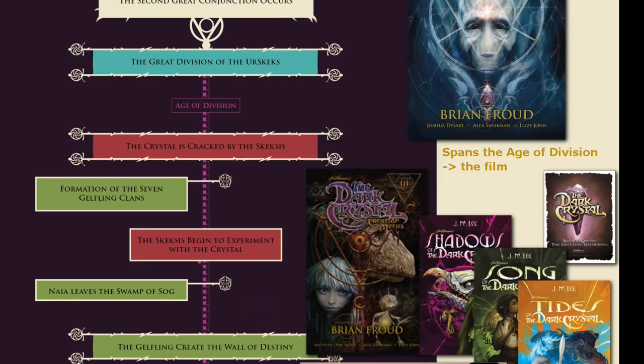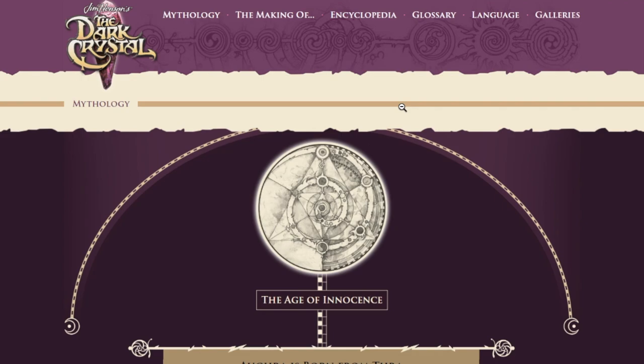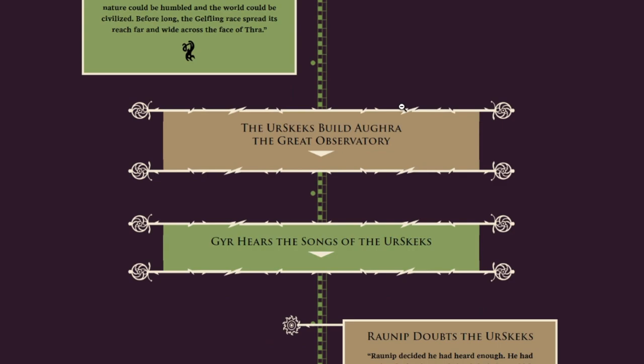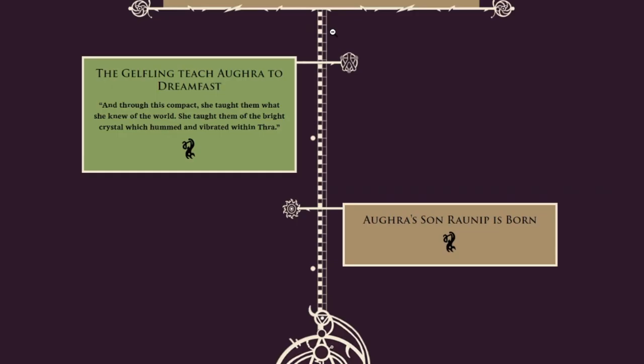I am trying something new — I really just have the timeline from the website. If you go to darkcrystal.com and click on Mythology, there you have this really long timeline. If you have not read it yet, it is really good. However, I would keep from reading some of it if you haven't read all the media, because I think it does have some spoilers in it.